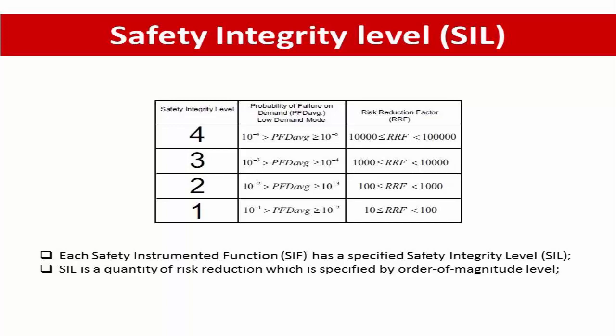When existing protection layers are insufficient, adding a SIS protection layer will be required. The quantity of risk reduction is specified by order-of-magnitude levels called Safety Integrity Levels, or SIL, as indicated in the table below. SIL levels range from one to four, defined by the magnitude of the probability of failure on demand or risk reduction factor.